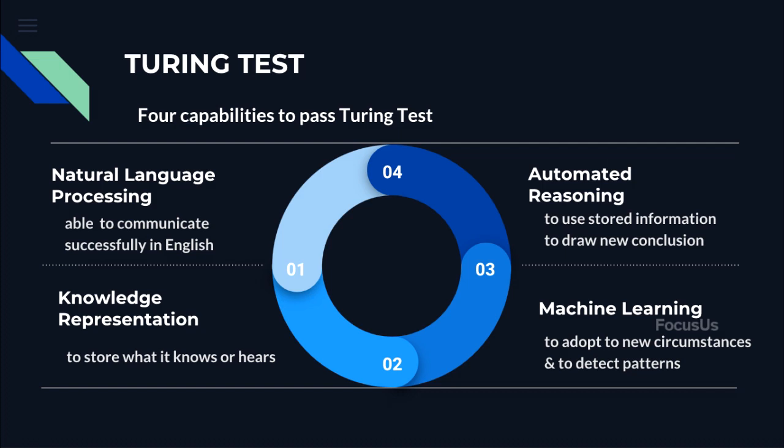That concludes acting humanly, also called the Turing test approach. In summary, we need to understand the Turing test and these four capabilities required to pass it.